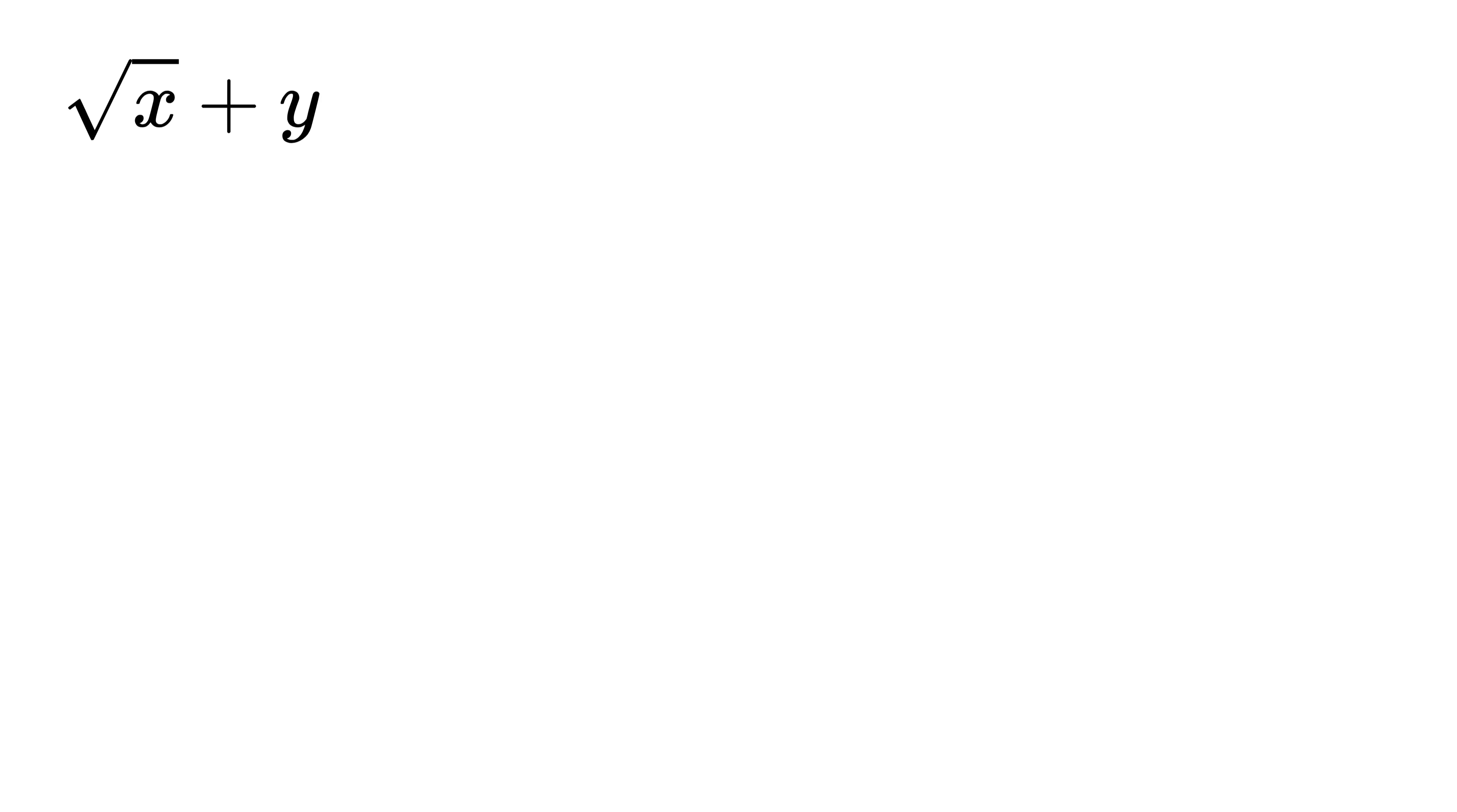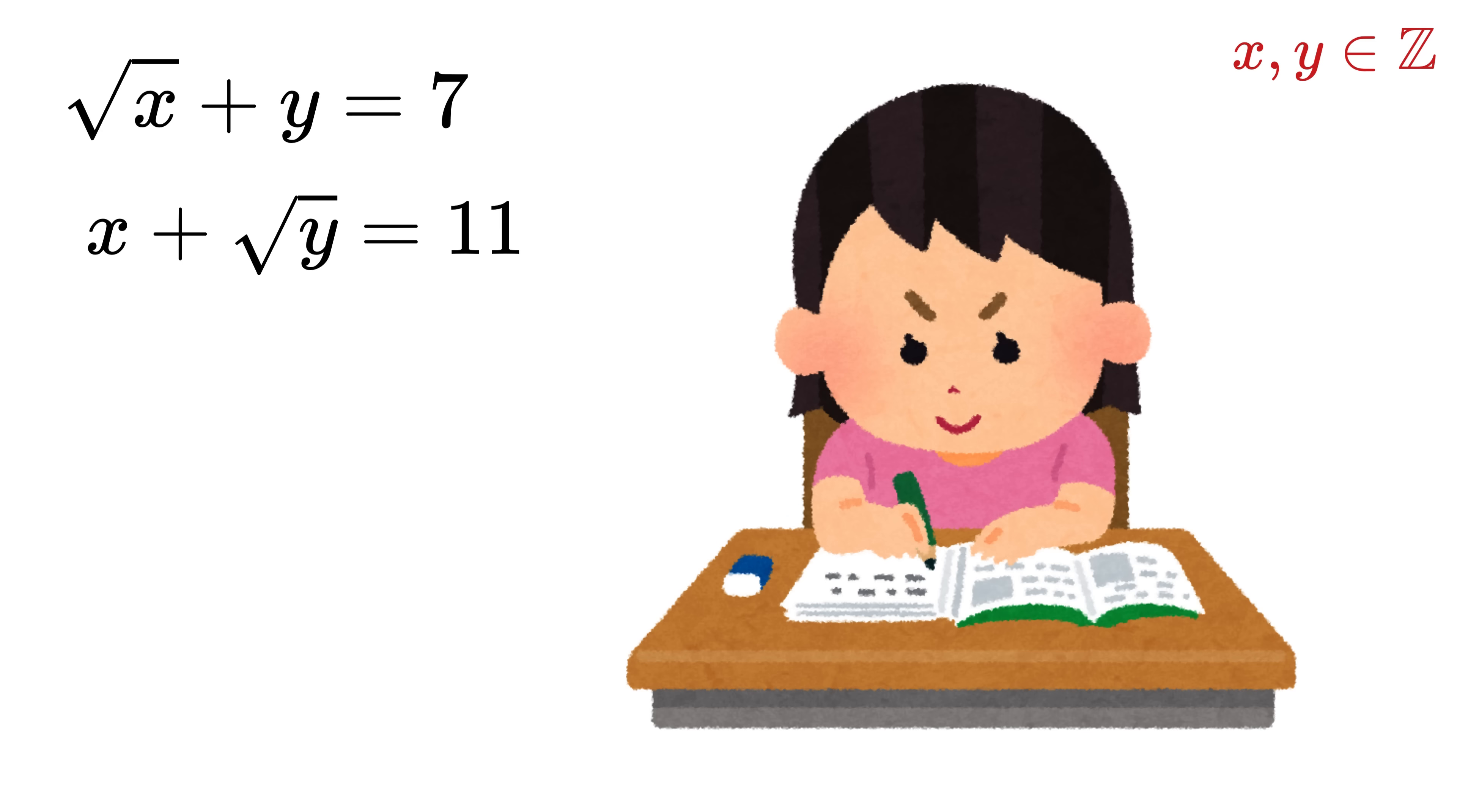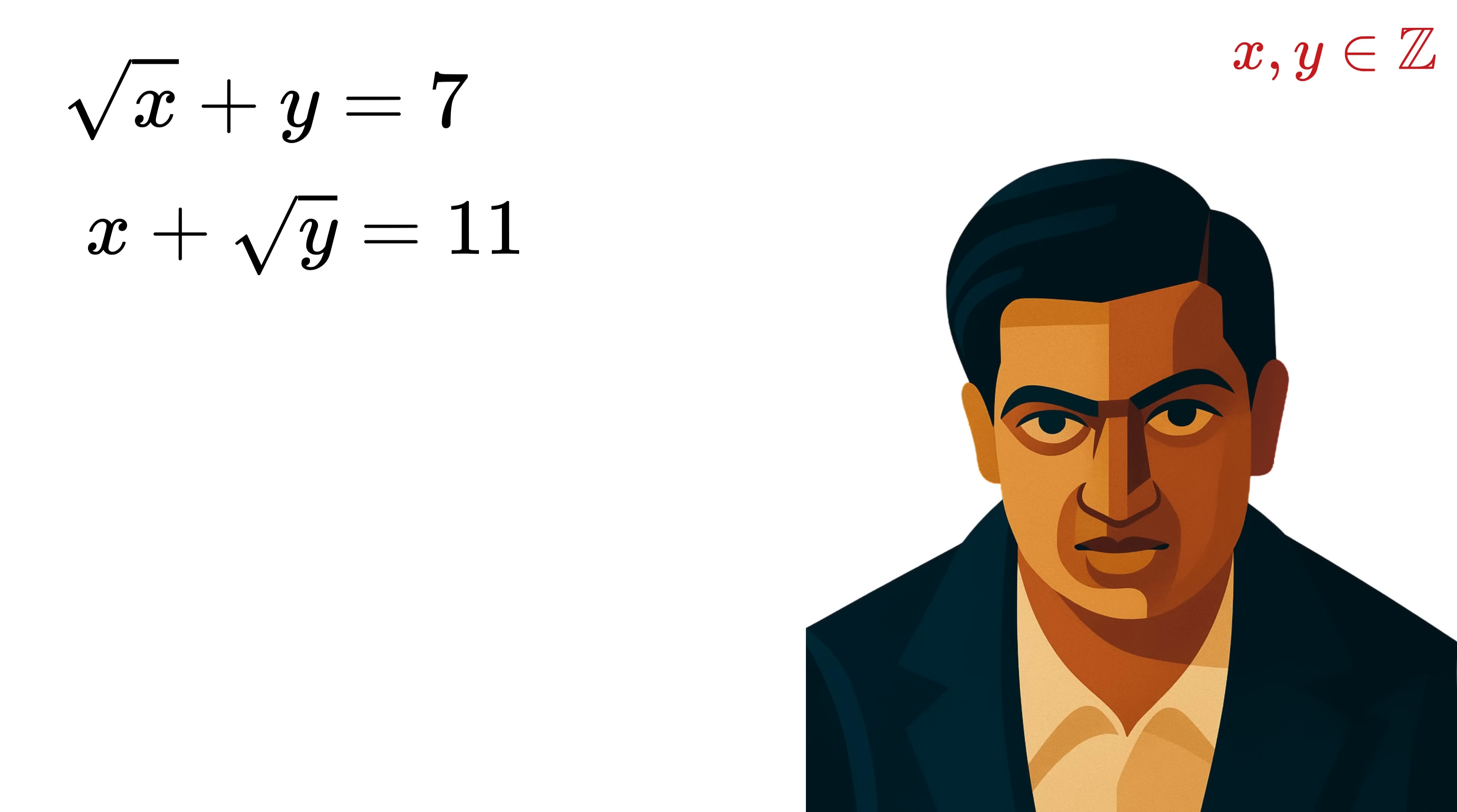Square root of x plus y equals 7, and x plus square root of y equals 11, where x and y are positive integers. At first glance the equation might look simple, but don't be fooled—this isn't just a school level math puzzle, because this was asked by one of the legendary Indian mathematicians of all time, Srinivasa Ramanujan.